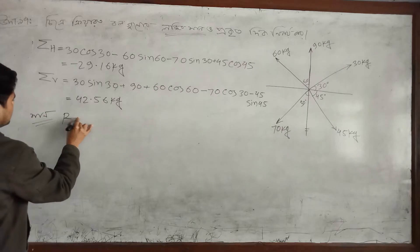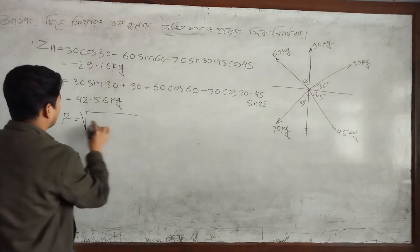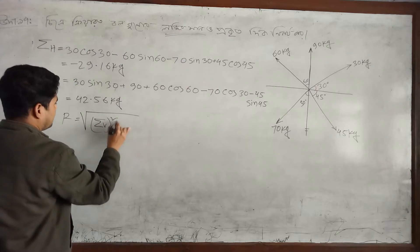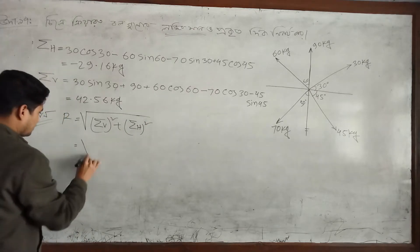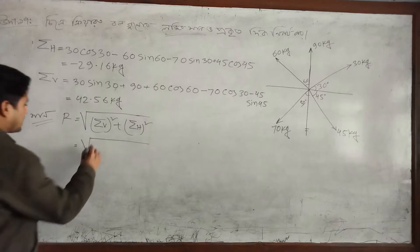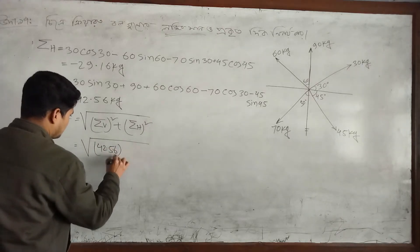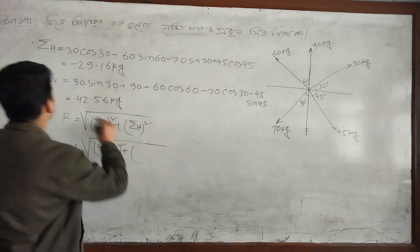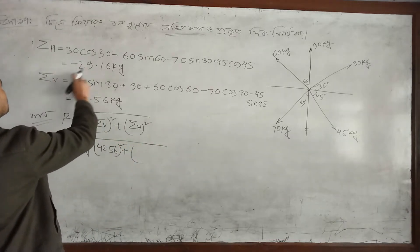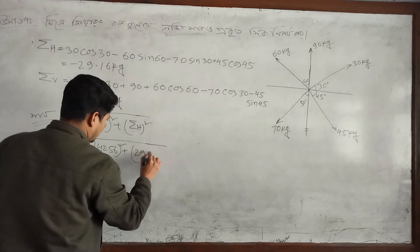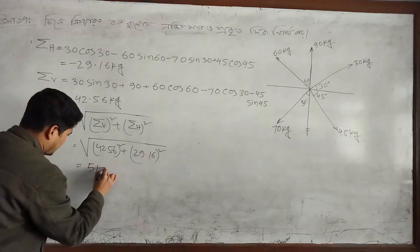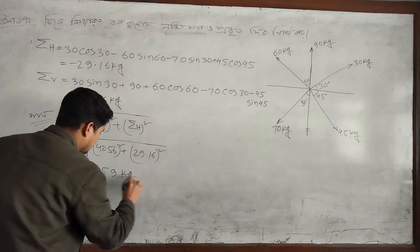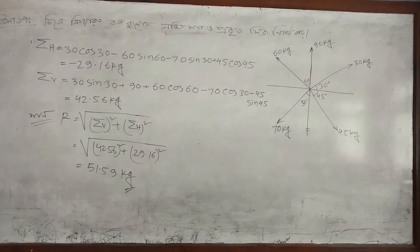R = root of (summation of vertical² + summation of horizontal²). Vertical force 42.56 — 42.56 squared — plus horizontal force 29.16 — 29.16 squared. Result: 51.59 kg. This is the resultant force value — already calculated.